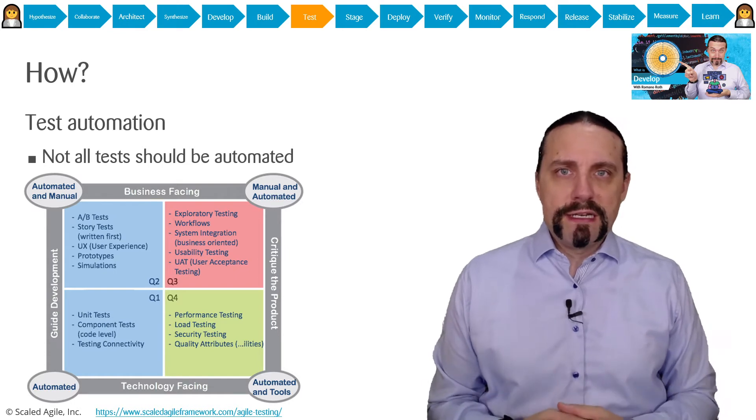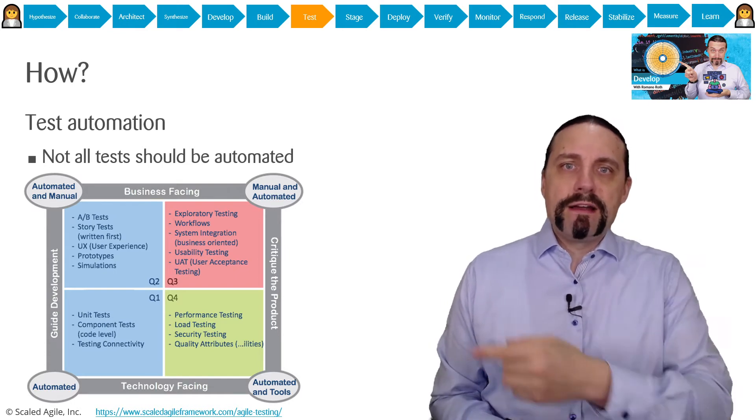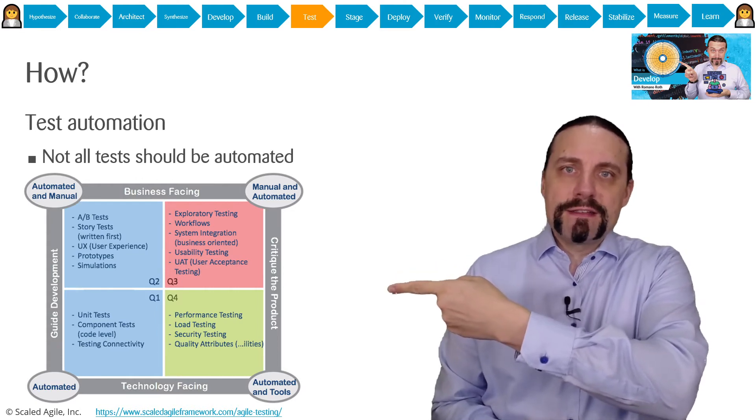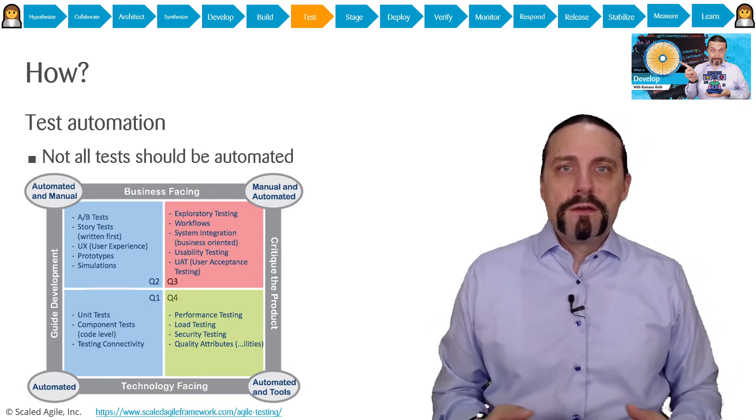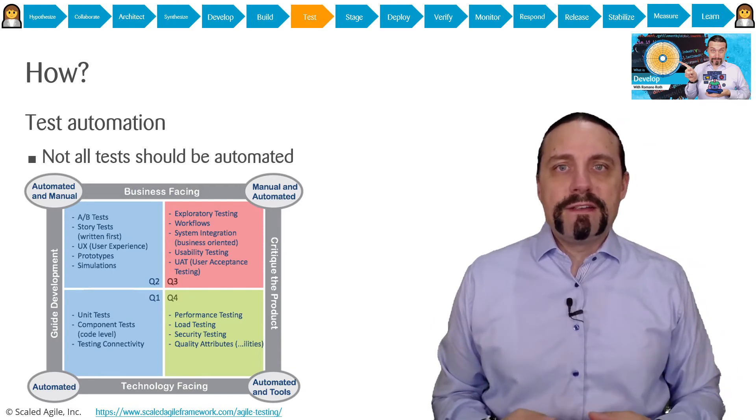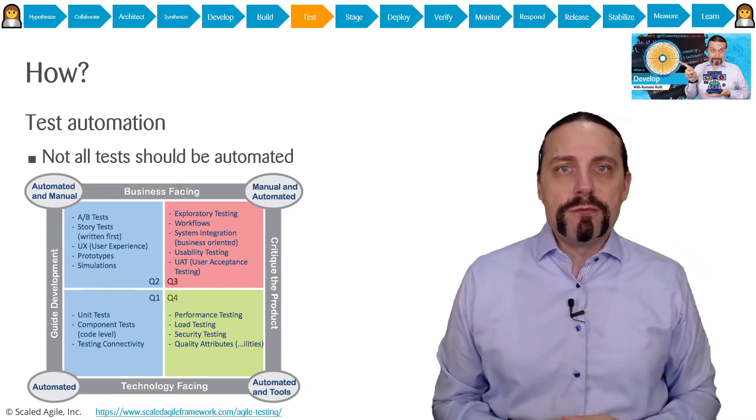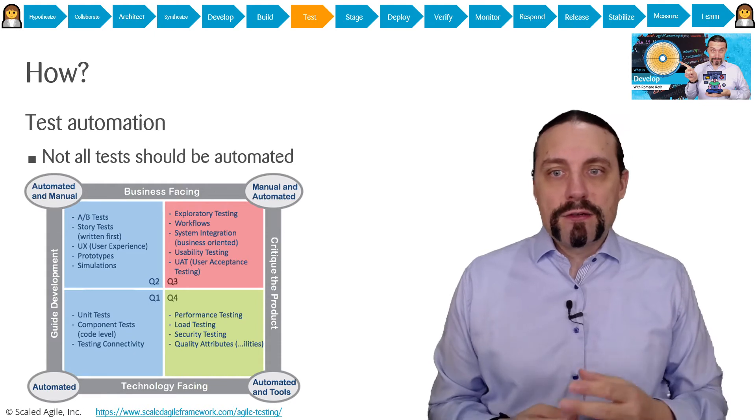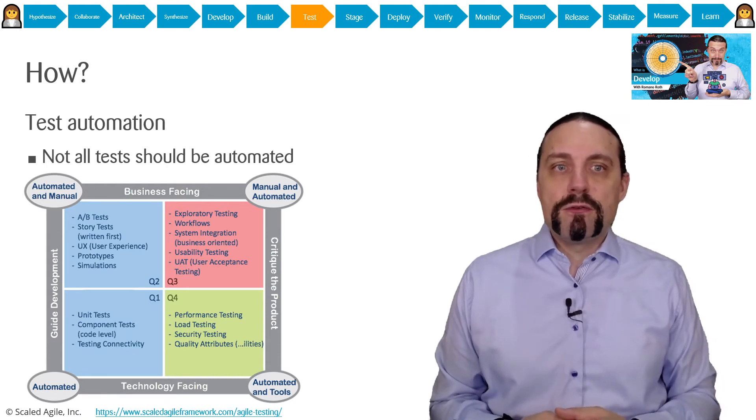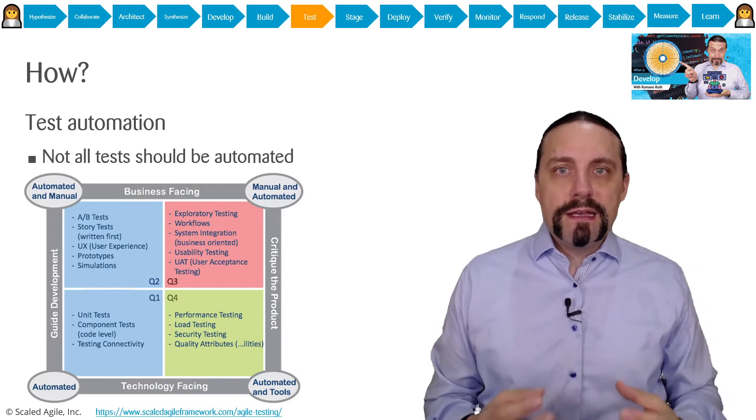To get a clearer picture on the test automation I have brought you this agile test matrix. First of all we have the area Q1 below which is blue. In there you have the unit and component tests. They can easily be automated.